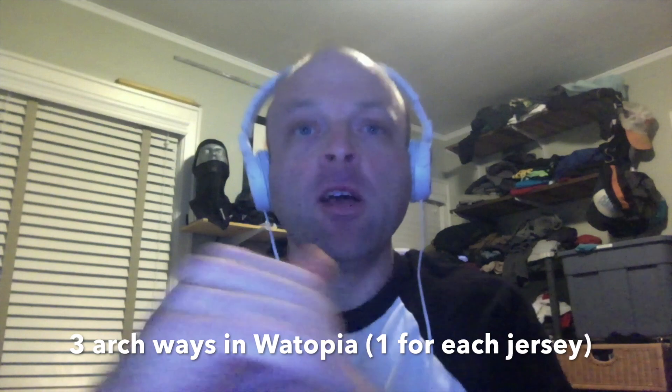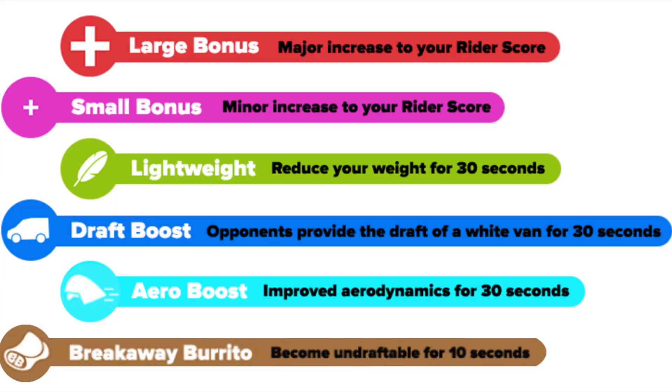Let's do a deep dive on what the power-ups mean. Within that little circle on the screen, if you pass through an archway on occasion you will get a power-up — at the start/finish line and a few other archways. The large red circle gives you extra rider experience points — XP. You'll see it fly up and say plus 30 XP, plus 60 XP, or plus 15, whatever the case is. The smaller pink circle with a plus sign in it is the smaller XP bonus, so that just gives you fewer points.